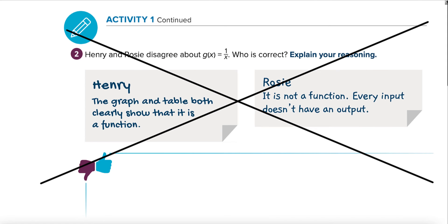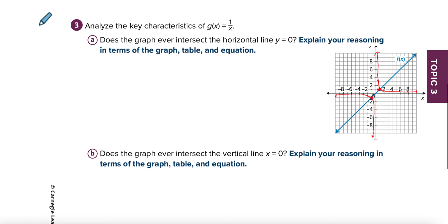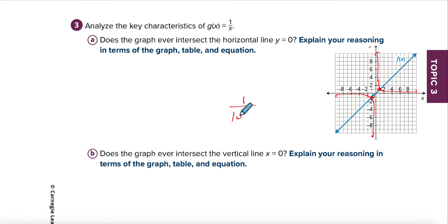Does the graph ever intersect the horizontal line y equals zero? No, it never intersects. We can see it on the graph, and we can see in the table that every time we had these values they were reciprocals getting bigger and bigger, but they're never going to equal zero. They cannot equal zero because we cannot divide by zero.